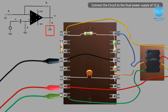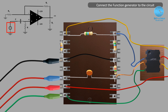The function generator is connected to the circuit. The function generator positive probe connects to the point of the capacitor. The function generator ground terminal connects to common ground. The function generator connection is now complete, with the positive probe and ground terminal connected.